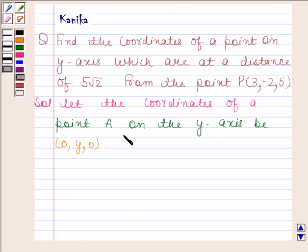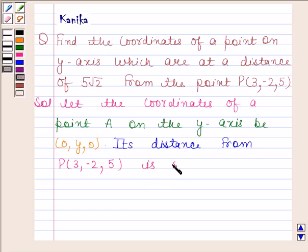We are given that its distance from point P having coordinates (3, -2, 5) is 5√2 units.